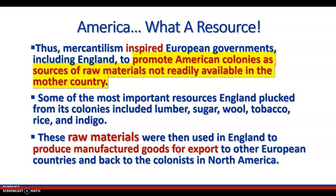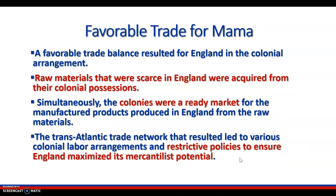Mercantilism inspired European governments, including England, to promote American colonies as a source of raw materials not readily available in the mother country. Some of the most important resources England plucked from its colonies included lumber, sugar, wool, tobacco, indigo, and rice. These raw materials were used in England to produce manufactured goods for export to other European countries and to the colonists of North America. A favorable trade balance resulted for England in the colonial arrangement. Raw materials that were scarce in England were acquired from their colonial possessions. Simultaneously, the colonies were a ready market for the manufactured products produced in England from the raw materials.